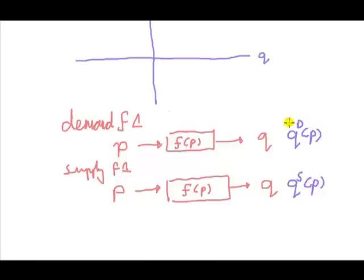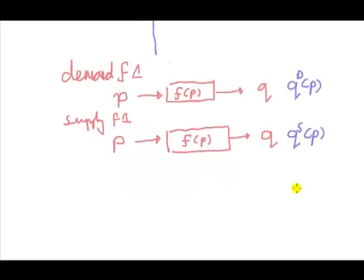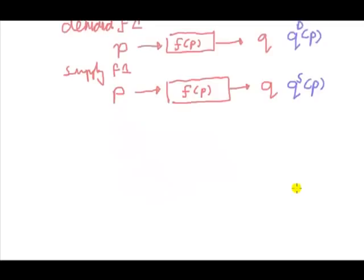Down here we could denote the supply function by qS as a function of p. So when we say qD(p), that is the demand function, and this is the supply function. These are two basic functions introduced for the first time in economics.